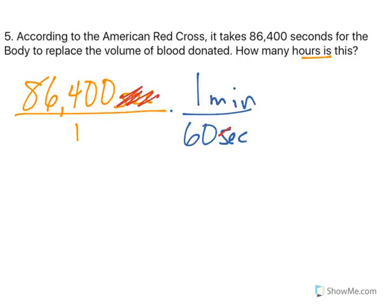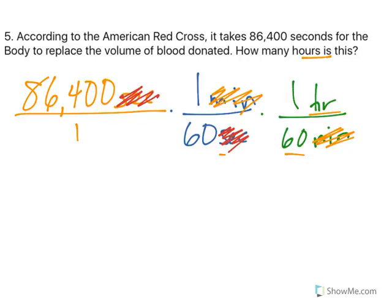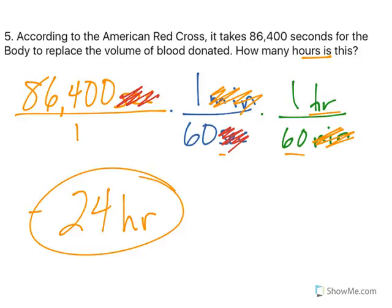but I know there are 60 seconds in one minute. Seconds on the top, cancels out with seconds on the bottom. And then I know there are 60 minutes in one hour. Minutes, cancels out with minutes, and now I have the label of hours. So, 86,400 divided by 60, divided by 60, gives me 24 hours. So, if you give blood, it'll take you approximately 24 hours to replace the blood that you lost in that donation.